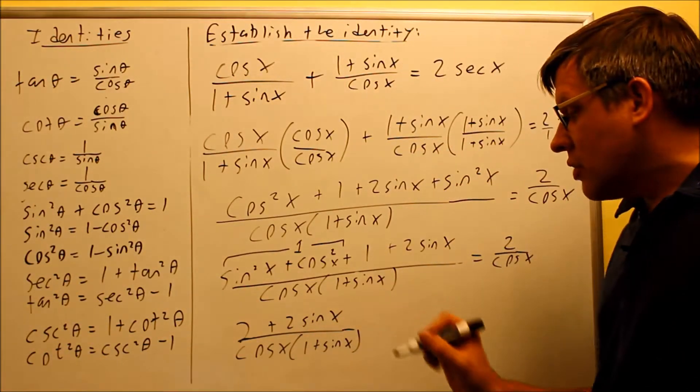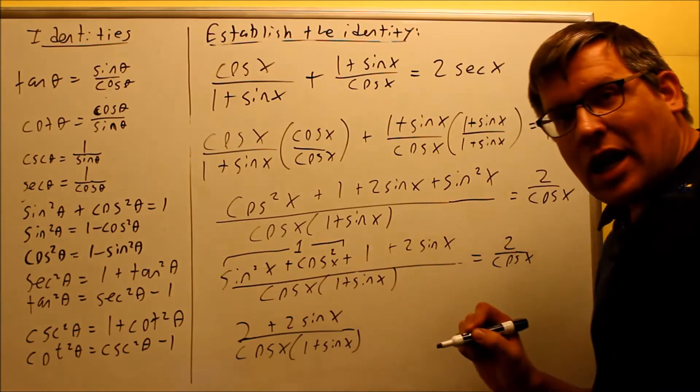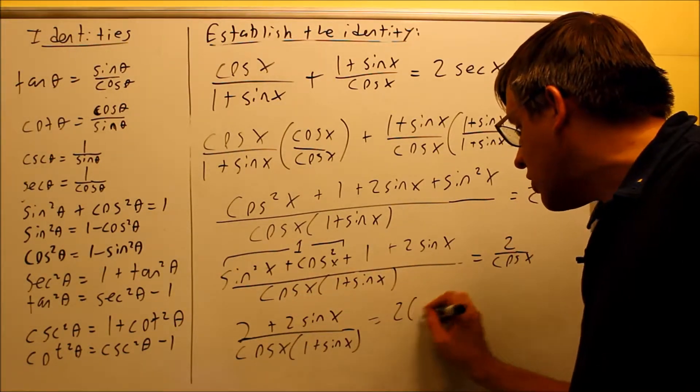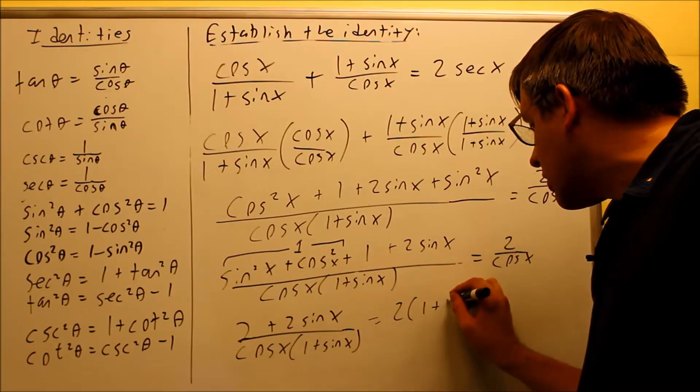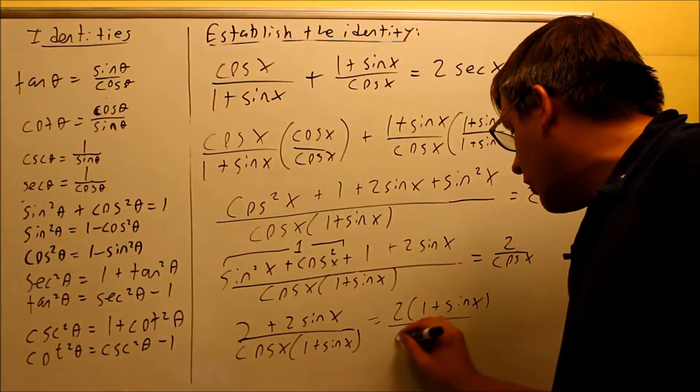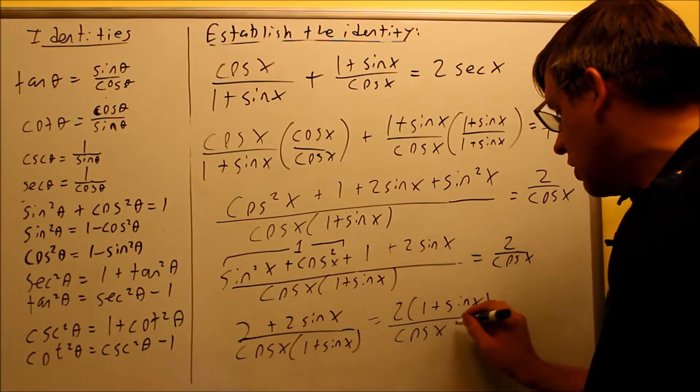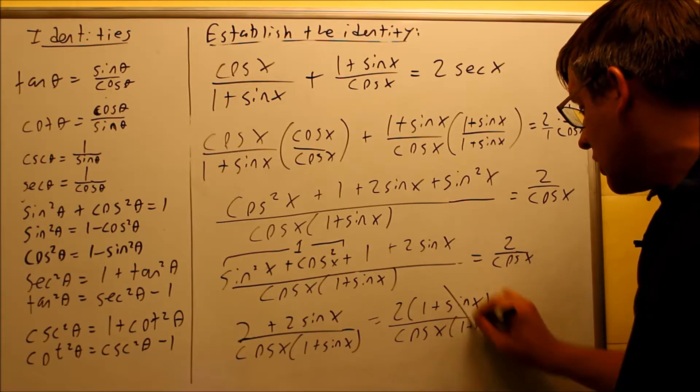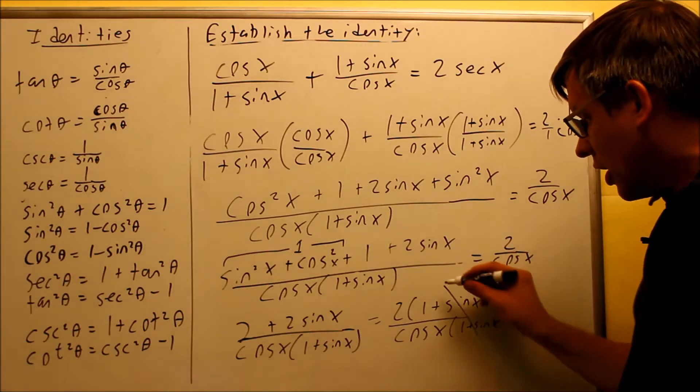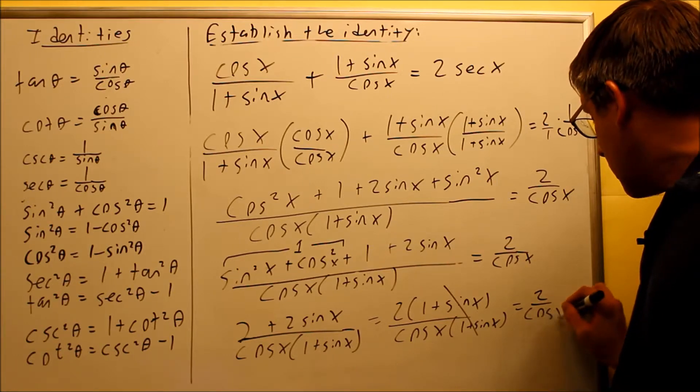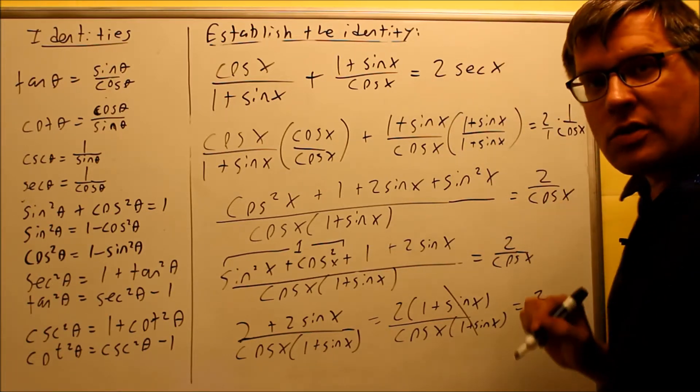What I want to do next is factor out the top, because I have a common factor now, a 2 I can pull out, so I have 2, and I have 1 plus sine x, and the bottom I have cosine x, and then 1 plus sine x. What's going to happen is these two are going to cancel, so I get both those to cancel out on top, and what I'm left with is the right-hand side. I get 2 over cosine x, so now I've shown that one side equals the other.